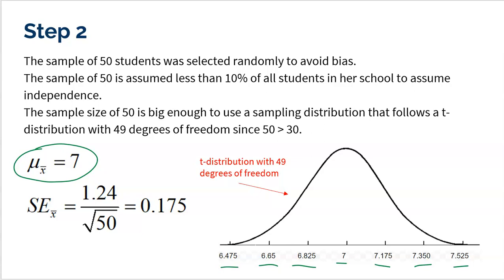And the sample of 50 is big enough to use a sampling distribution that follows a t-distribution with 49 degrees of freedom. And the reason for that is because 50 is larger than 30. So as long as our sample is at least 30, 30 or larger, then we could always use a sampling distribution.